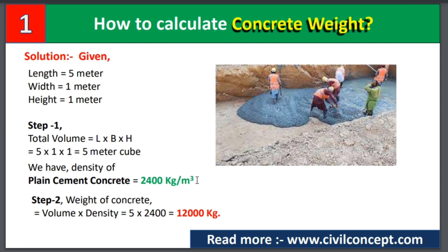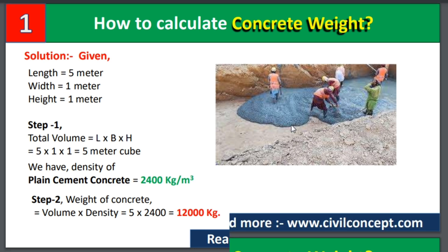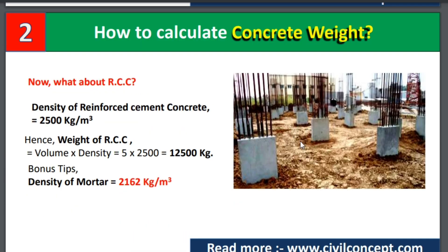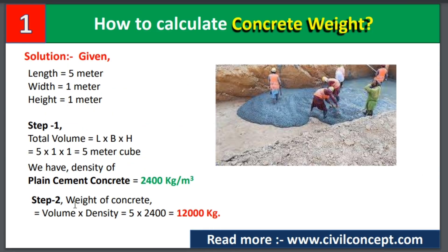There are two types of concrete: plain cement concrete (PCC) and reinforced cement concrete (RCC). As you can see in the picture, plain cement concrete has no steel bars or rebar. Reinforced cement concrete is the type in which rebar is built into the concrete. Plain cement concrete has a density of 2400 kg per cubic meter.